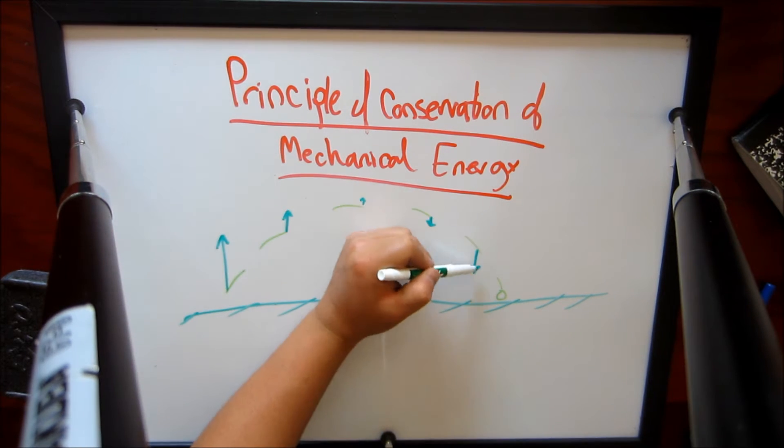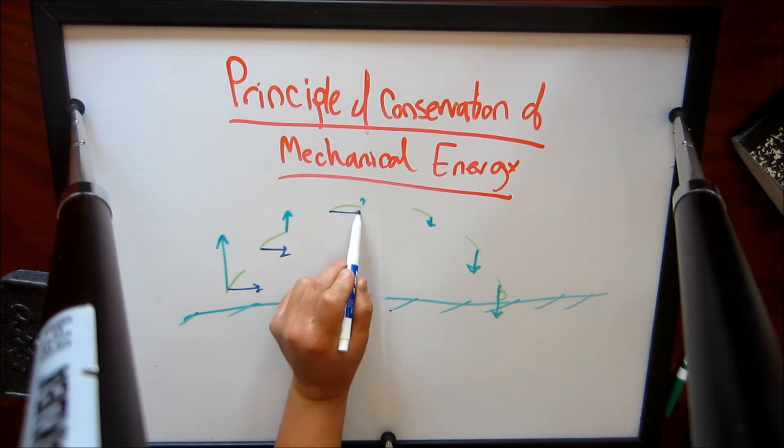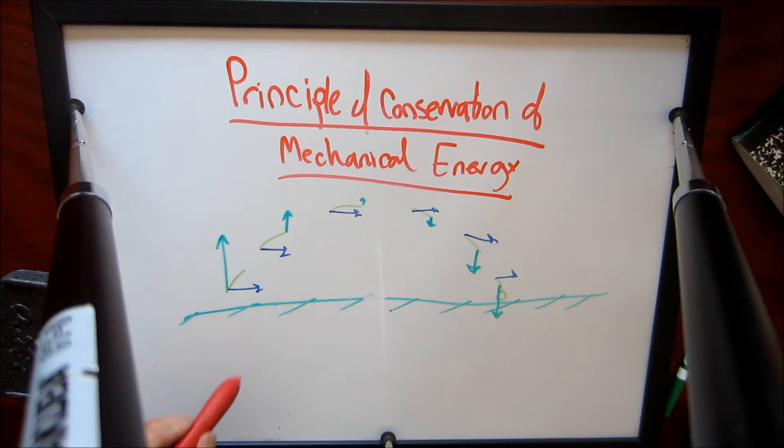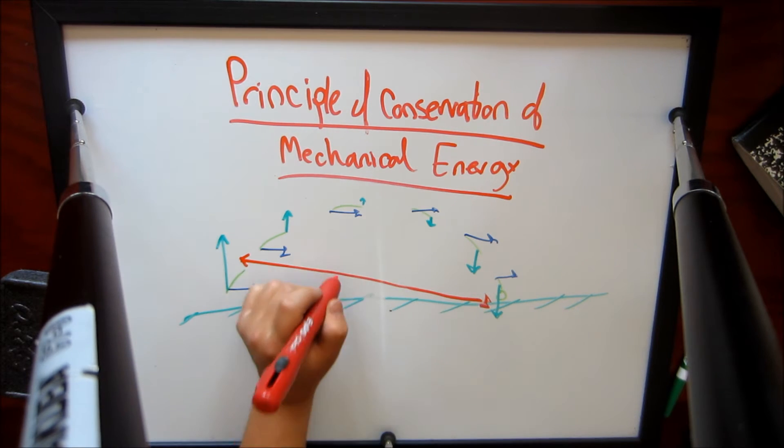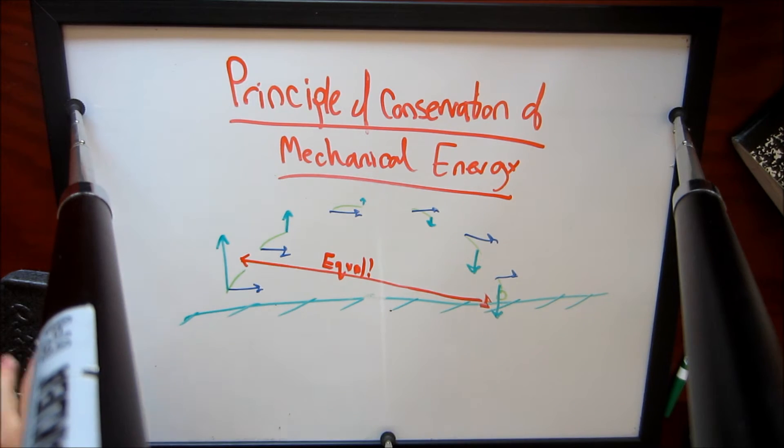The green arrow represents the vertical component and the blue represents the horizontal. Now notice the first green arrow is the same as the last green arrow. They are equal to each other. This is due to the conservation of mechanical energy.